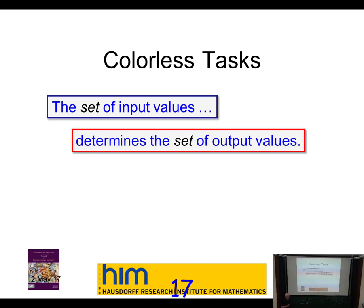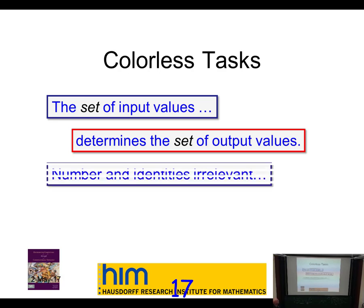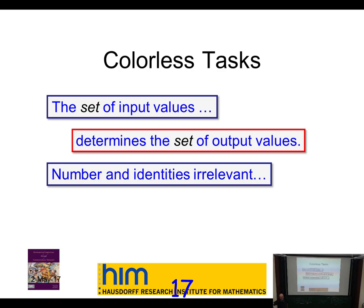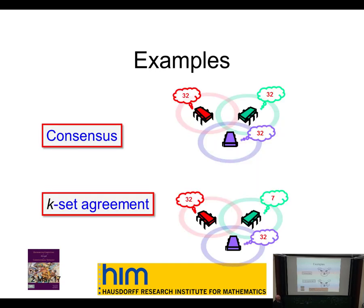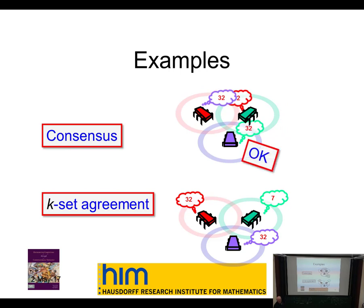This is the fundamental thing we study in this branch of distributed computing. Colorless tasks — a slight technicality — are tasks where we don't care who gets which value, only the values themselves matter, and we don't particularly care how many times a value shows up. The set of inputs determines the set of outputs; the identities of the participants don't matter. We can prove things where identities do matter, but it's slightly more complicated and not terribly more interesting.